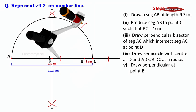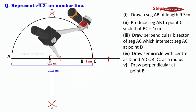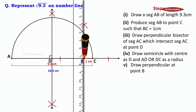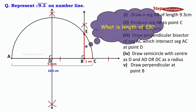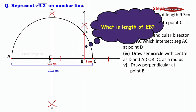For drawing the perpendicular, we cut the arc and join the arc intersection and B with a line — it is now perpendicular. What is the length of this EB? It is √9.3. The question is to represent √9.3 on the number line, and this length EB is √9.3.